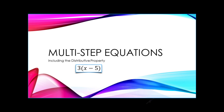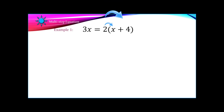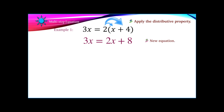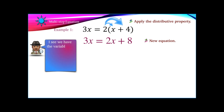That's the distributive property, of course. So it's time to look at some examples. Example 1: 3x equals 2 times the quantity x plus 4. First thing we'll do is apply the distributive property, and we have a new equation. In this case, we have the variable on both sides of the equation — there's an x on the left side of the equal sign and an x on the right side.